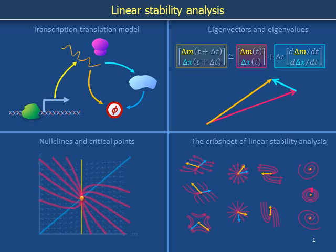In this video, we will describe a toy transcription translation model — it's often the model you see on the second day of Systems Biology 101. We will analyze the dynamics qualitatively by using the system's phase portrait to visualize its nullclines and critical point. In the next video, we will apply eigenvector eigenvalue analysis. And in the third video, we will walk through a crib sheet of qualitative dynamics that two-dimensional linear systems of differential equations can display.